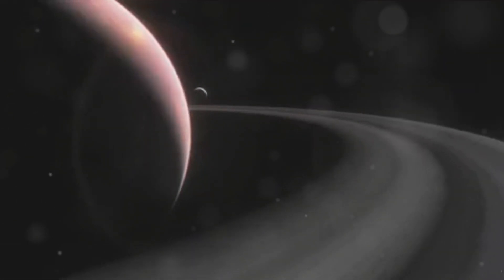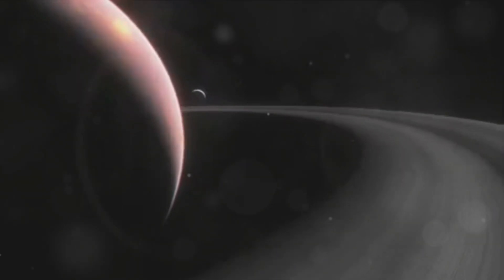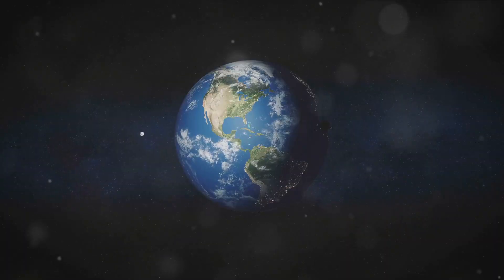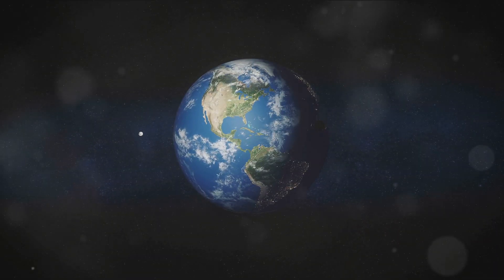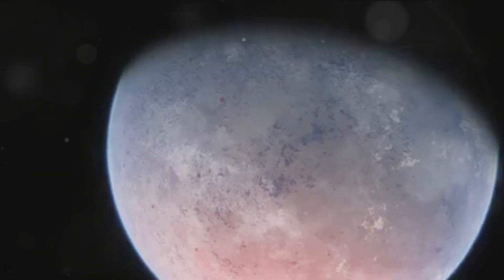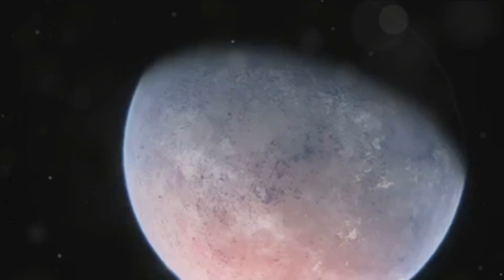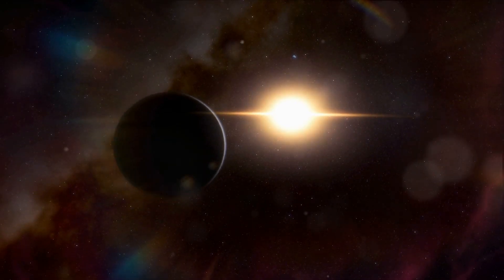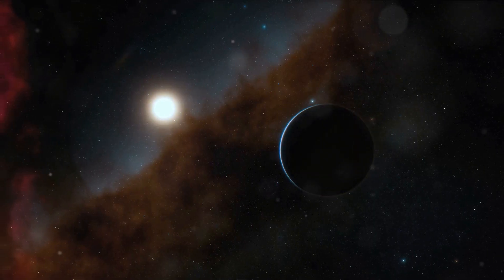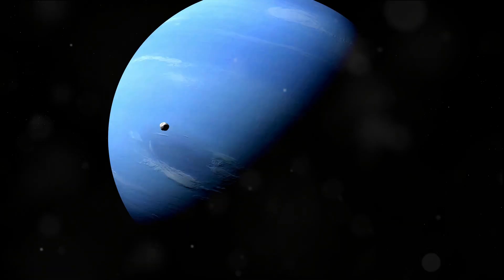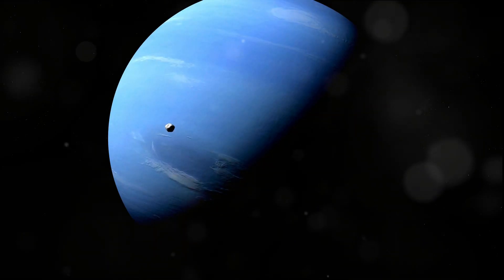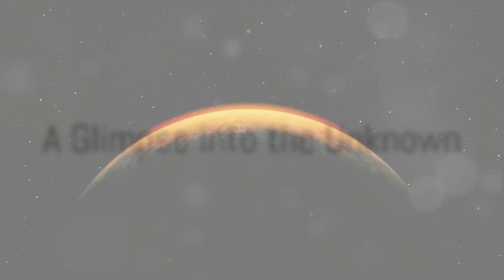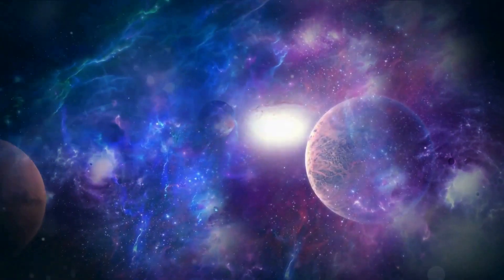In the grand scheme of things, Wolf 1069b is pretty close to us, lying within our galactic neighborhood. However, in human terms it's still quite distant. But don't let this distance discourage you. In the vast expanse of the universe, finding an Earth-like exoplanet in our cosmic backyard is like finding a needle in a cosmic haystack. It's a testament to the power of human curiosity and the advancements in our technology. But not all discoveries are Earth-like, as evidenced by the next exoplanet on our list. TOI 4603b, a behemoth of an exoplanet, gives us insight into the diversity of the universe.